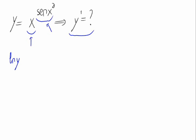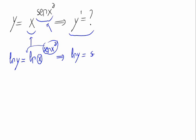The natural logarithm of y equals the natural logarithm of x raised to the sine of x squared. Using the properties of logarithms — specifically, in the logarithm of a power, the exponent goes in front — this becomes the natural logarithm of y equals the sine of x squared times the logarithm of x.